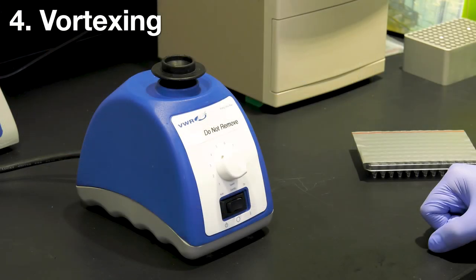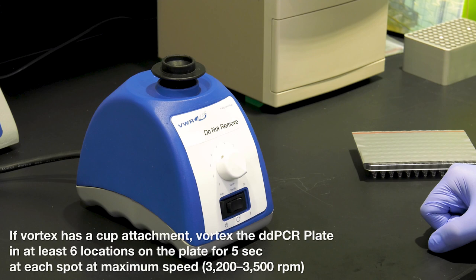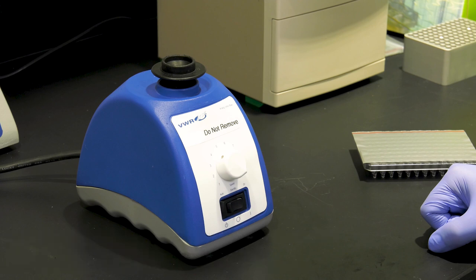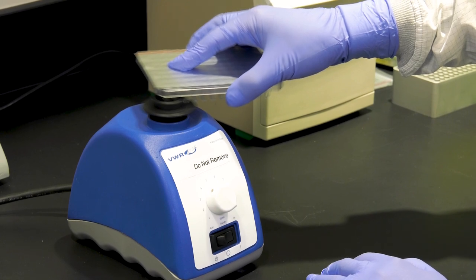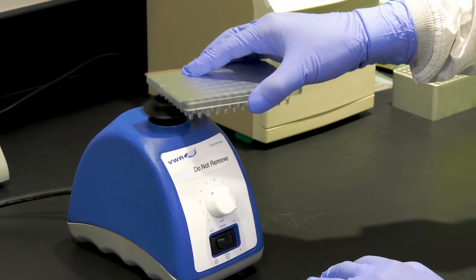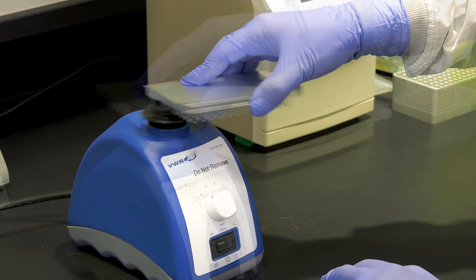To mix the reactions in the sealed plate to ensure that they are homogenous, you can use a vortexer with a small, cup-like rubber head attachment. Again, make sure it is set at the maximum setting, which should equate to 3200 to 3500 RPM. Turn on the vortexer and vortex the four corners first for about 5 seconds each, making sure that you are mixing really well.